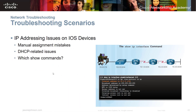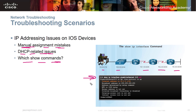For IP addressing issues on an IOS device, manual assignments can cause mistakes — you could put in the wrong IP address. Always double-check and verify manually entered IP addresses. You could also have DHCP-related issues; you might need to reboot your DHCP server, clear the DHCP cache, and tell your IP addresses to release and renew. The show ip interface gigabit-ethernet command shows the Ethernet address, broadcast address, and basic configuration information.